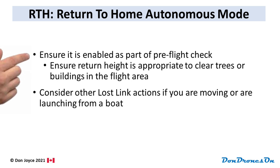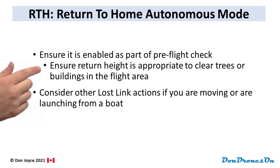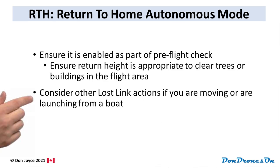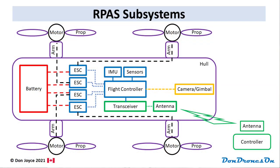This is the kind of setting that can be messed up by software updates. Also ensure that the return-to-home altitude is appropriate to clear trees or buildings or whatever is in the flight area. Now, if you're moving during your flight — perhaps you've launched from a boat, for example — consider carefully other lost link actions, since an RTH may result in your drone happily landing in the water.